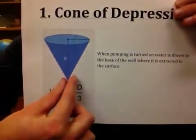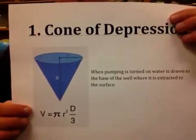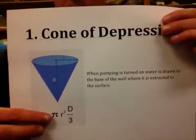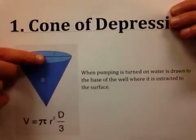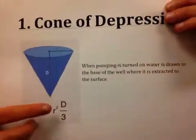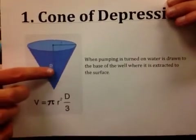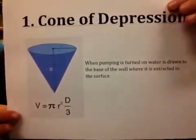We can calculate how large the cone of depression is using the equation for the volume of a cone: Volume equals pi (3.14) times the radius squared, where the radius goes from the well out to the edge of the cone of depression at the top of the water table, times the depth — from the top of what used to be the water table down to the point of the cone — divided by 3. Make sure you have that equation ready.